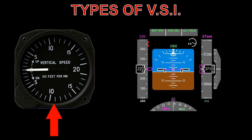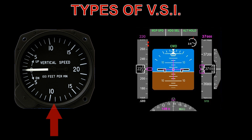The instrument on the left is a conventional instrument, often used on light aircraft. On the instrument on the right, the vertical speed is indicated on the scale at the extreme right of the instrument. This instrument is used on airliners. We will be looking at the basic instrument on the left.